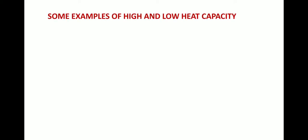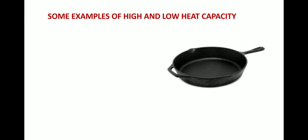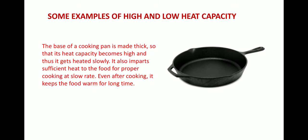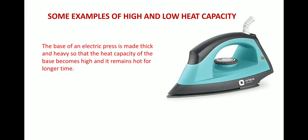Some examples of high and low heat capacity: the base of a cooking pan is made thick so that its heat capacity becomes high and it gets heated slowly. It also imparts sufficient heat to the food for proper cooking, and even after cooking it keeps the food warm for a long time. Similarly, the base of an electric press is made thick and heavy so that its heat capacity is high and it remains hot for a longer time.